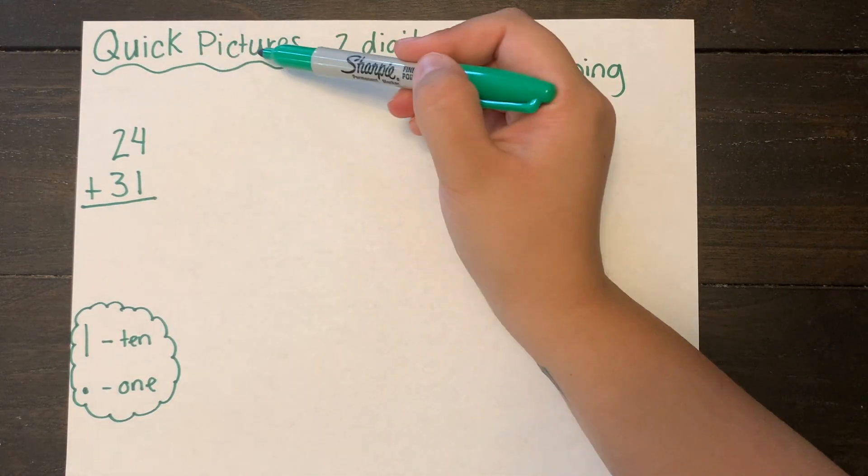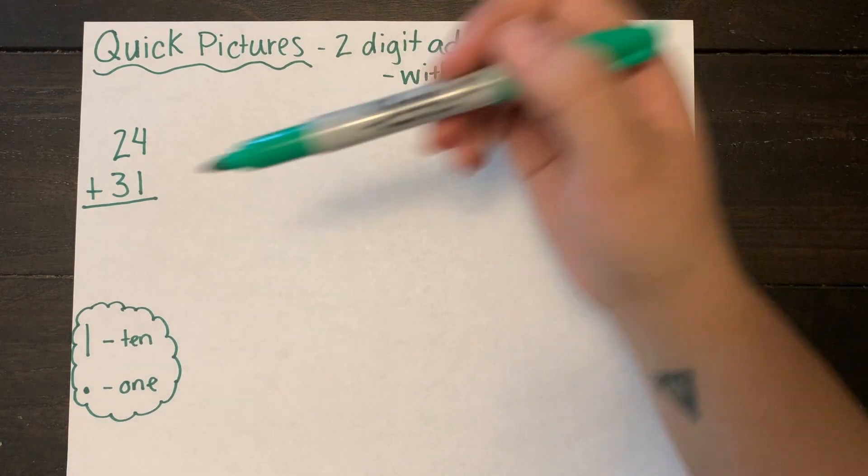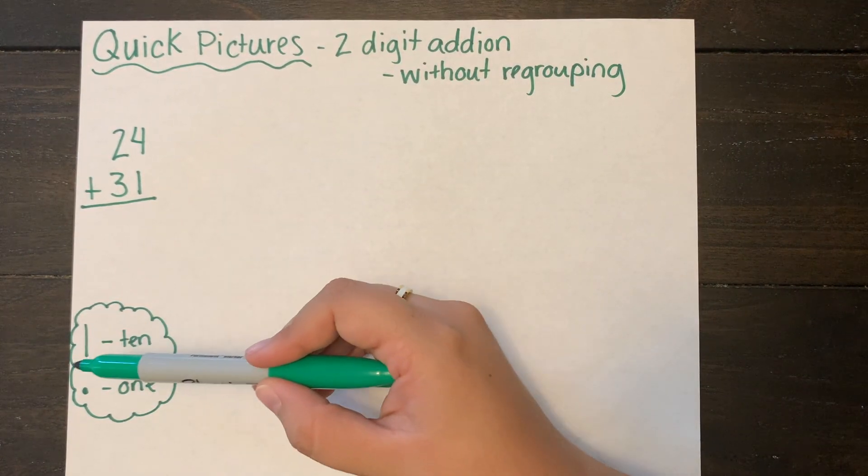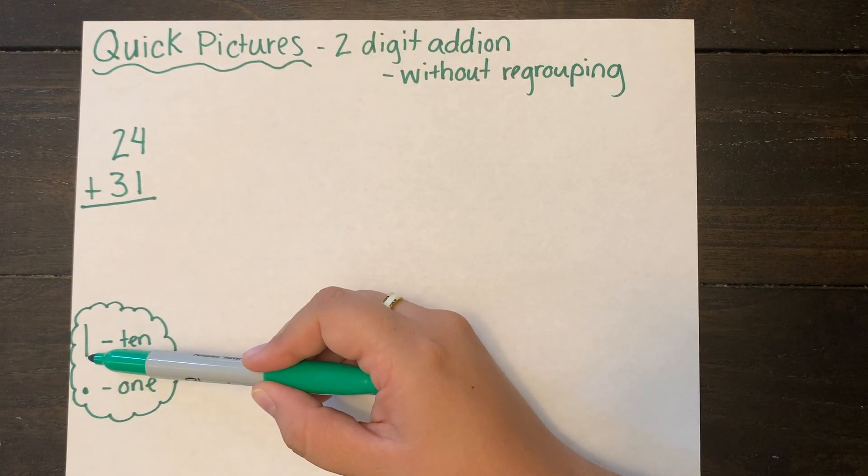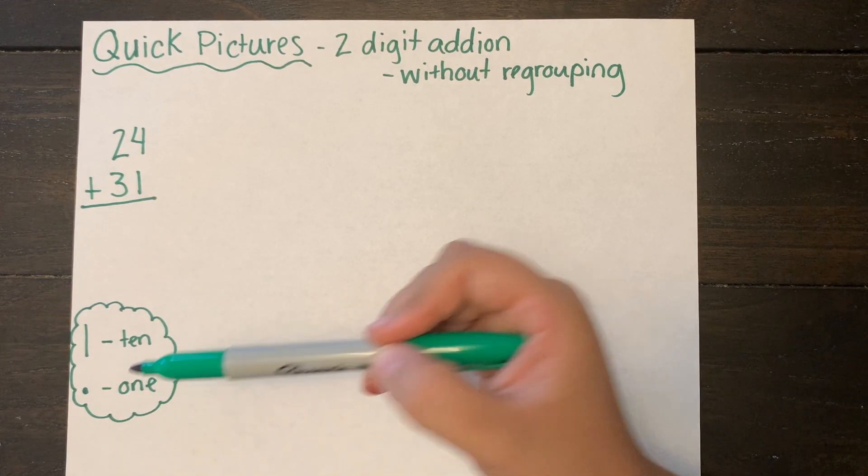So today we're going to be adding 24 plus 31. We're going to be using pictures to represent our numbers, so we're going to draw lines for our tens and dots for our ones.